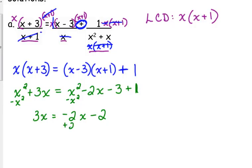So then it's just a linear equation. No biggie. Add the 2X, 5X is equal to negative 2. So X is negative 2 over 5.